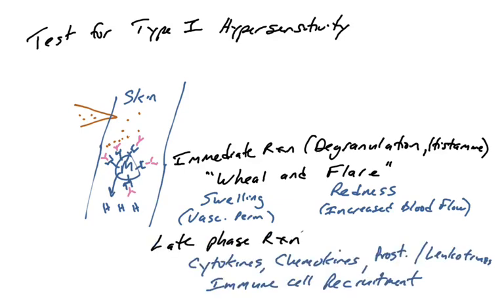You're also going to get what's called the late phase reaction, because once mast cells degranulate, they will also begin to synthesize cytokines and chemokines. They will begin to synthesize prostaglandins and leukotrienes, and you will get inflammation continuing hours later.